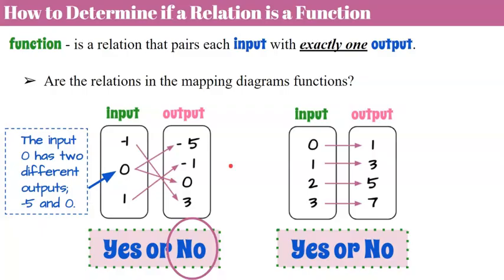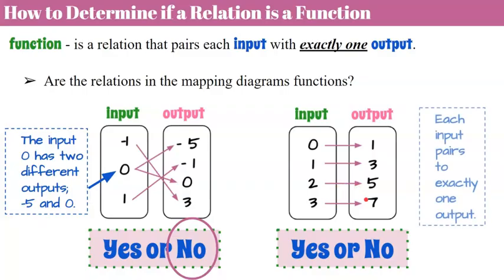Let's look at the second one. 0 maps to one output. 1 maps to one output. 2 maps to one output. And 3 maps to one output. So we can say that each input pairs to exactly one output. Therefore, yes, this relation is a function.